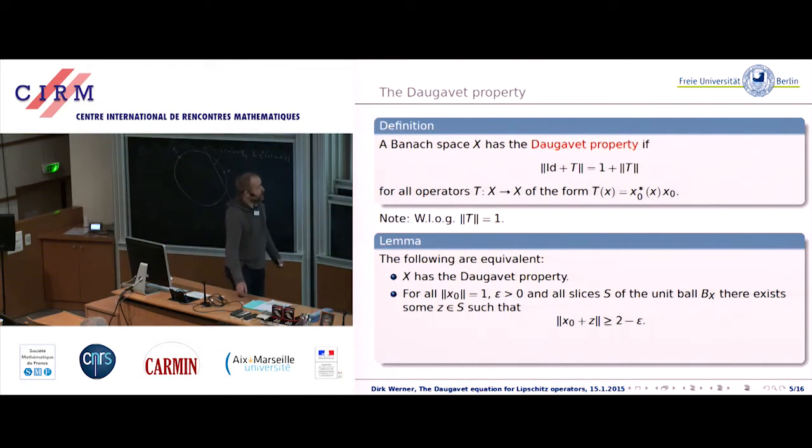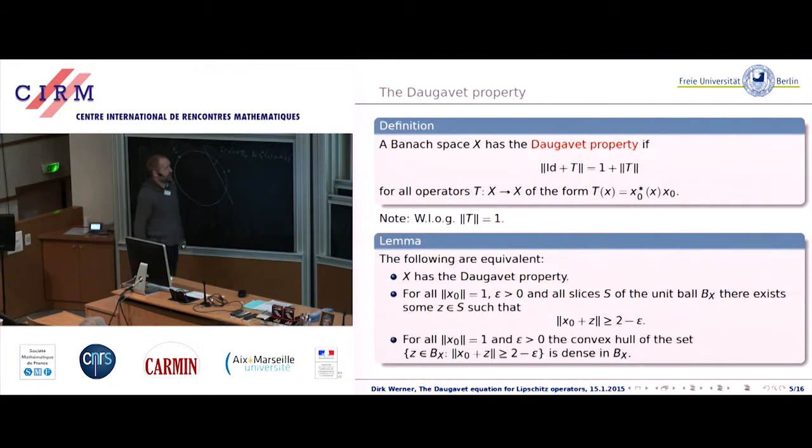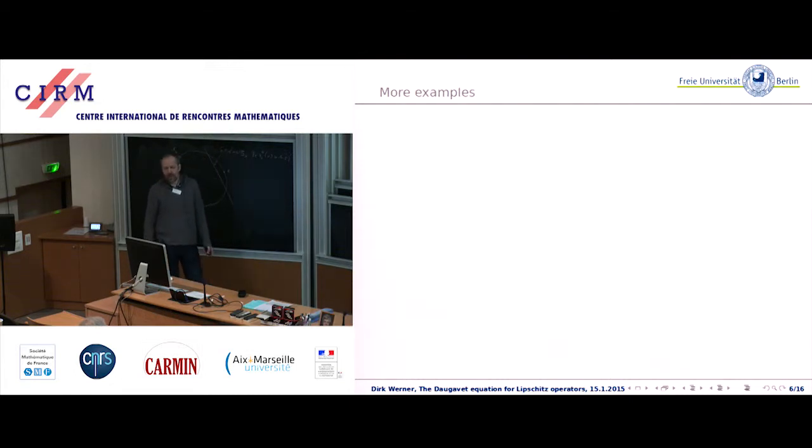Sometimes it's convenient to reformulate this lemma in such a way that if you look at all the z such that x0 plus z is almost 2, then this set intersects all the slices, and this means that the convex hull is dense. Again, it's a purely infinite dimensional phenomenon that this is possible.